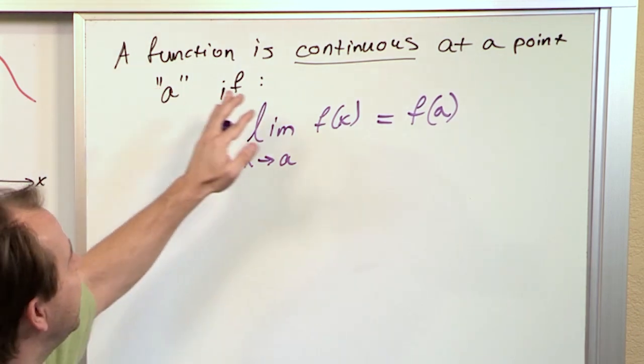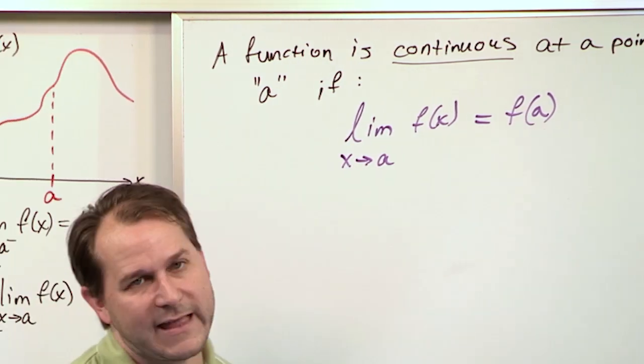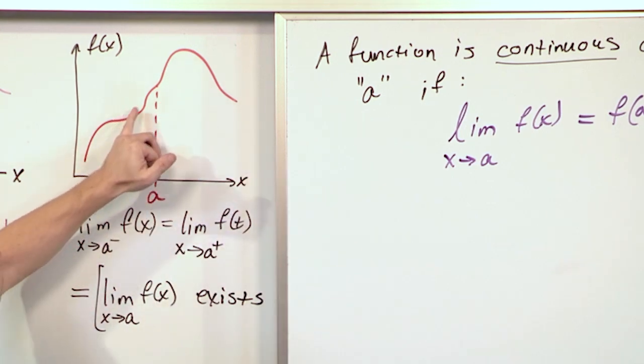So it's saying is a function's continuous at a point A if you can find its limit by just plugging in the value at that point, which is the case here, right here.